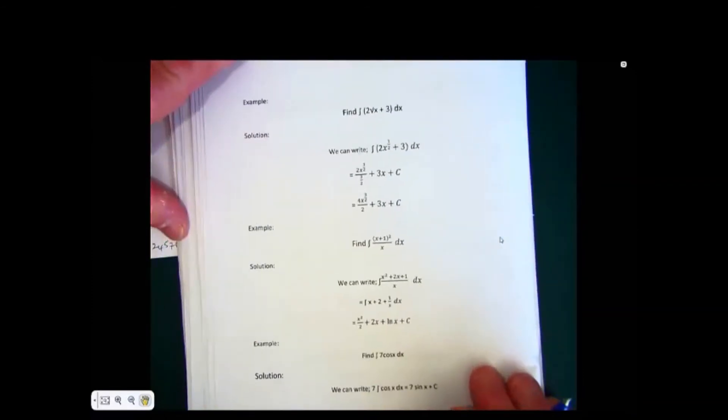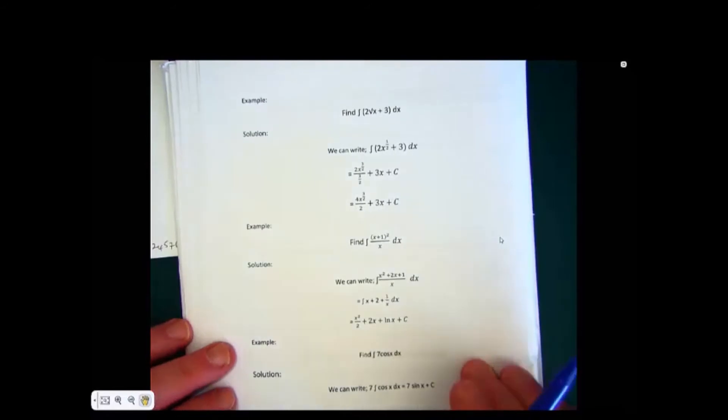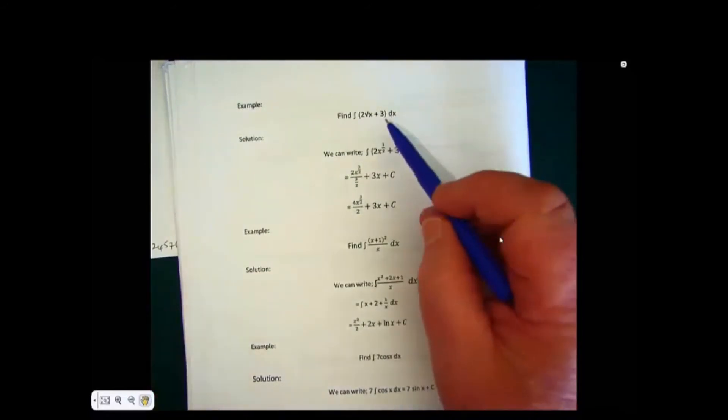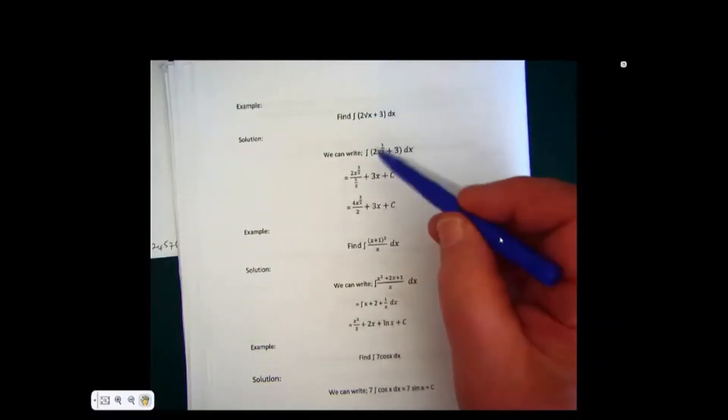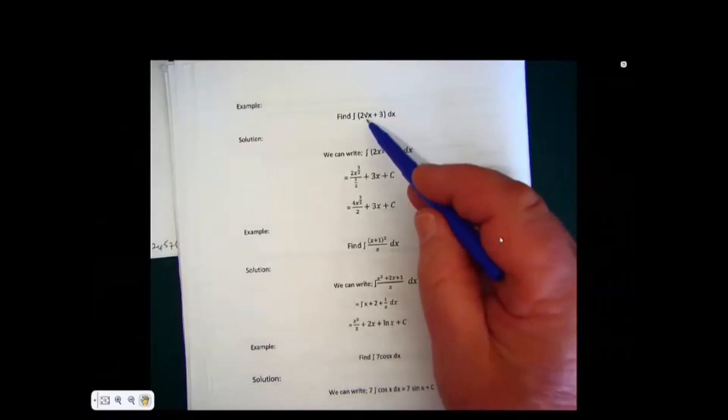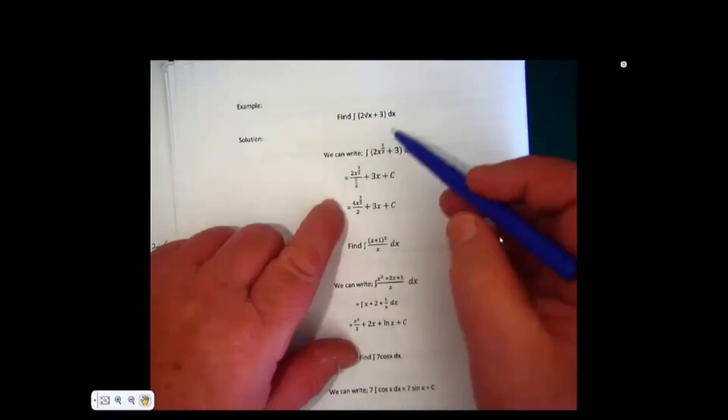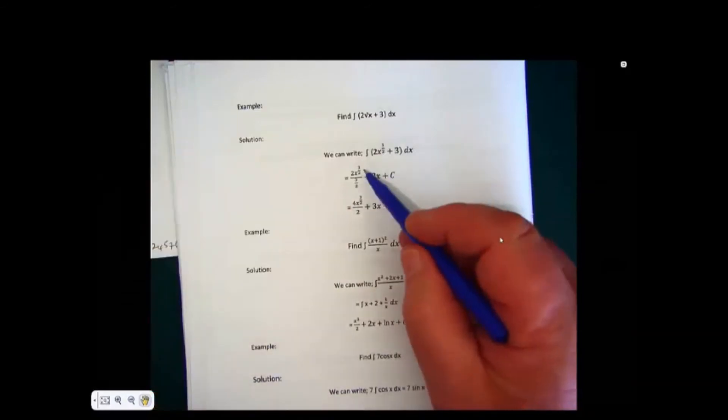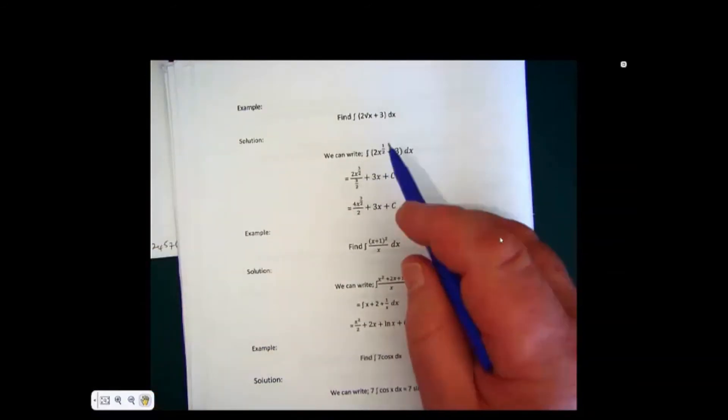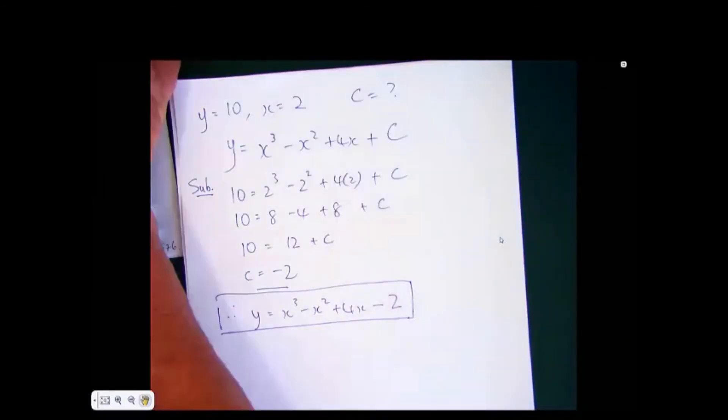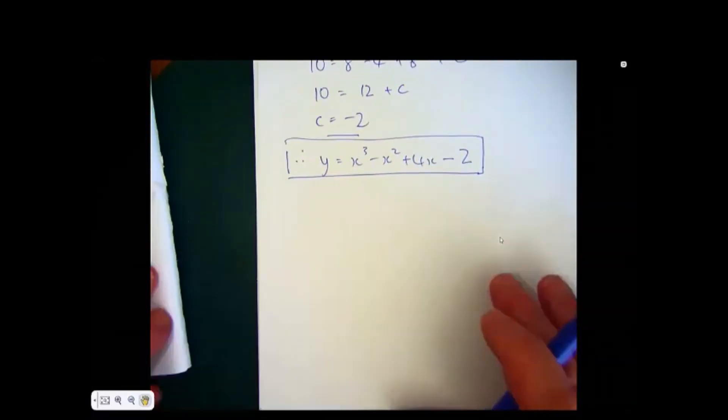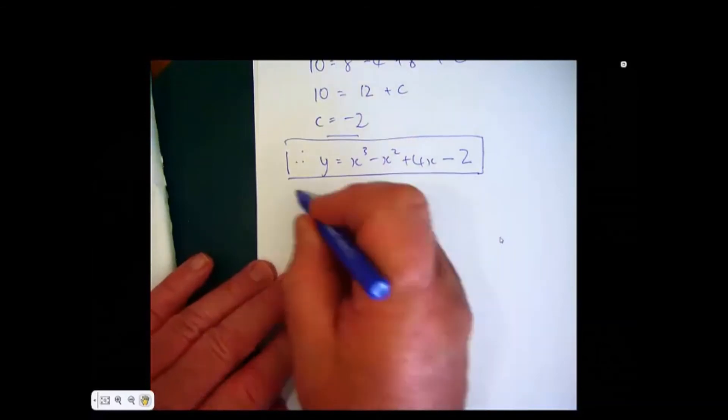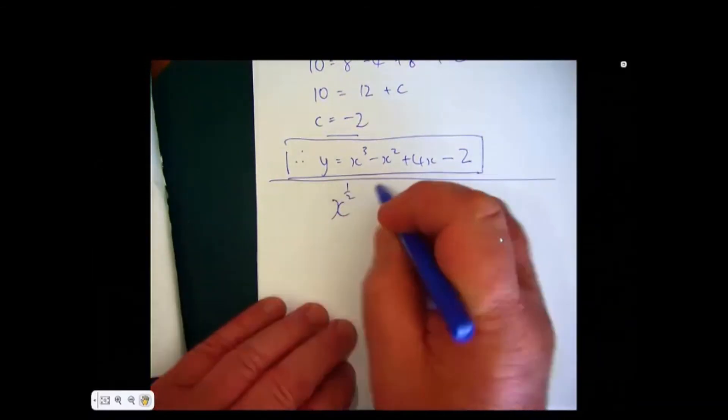The next one is a little bit tricky, but we can do it. This is a square root. Find the integral of 2 root x plus 3. So rearranging the square root of x to the half, we raise the power by 1 and divide by the power. Now the point here is that when you divide by a fraction, let me just show you this.